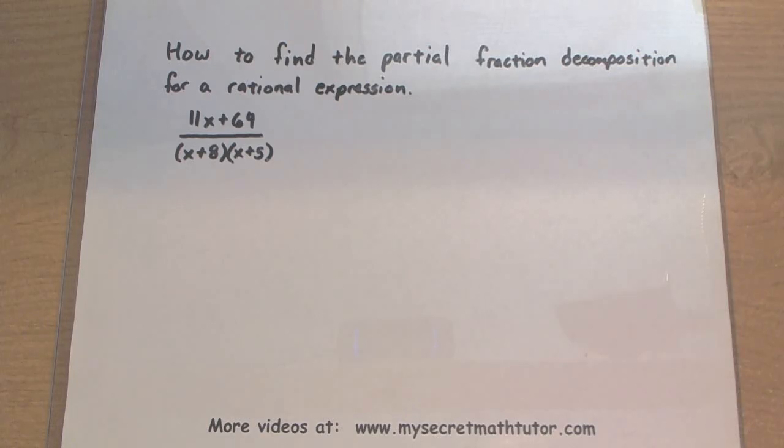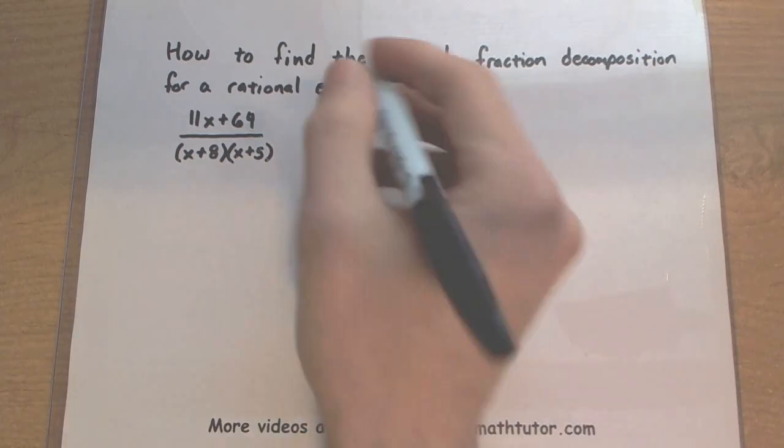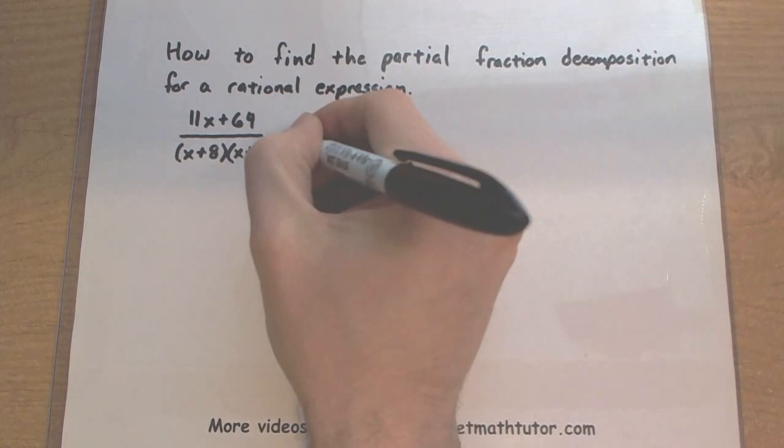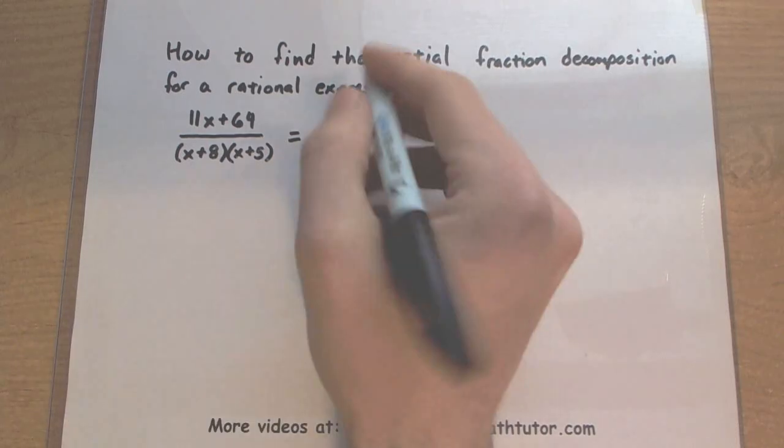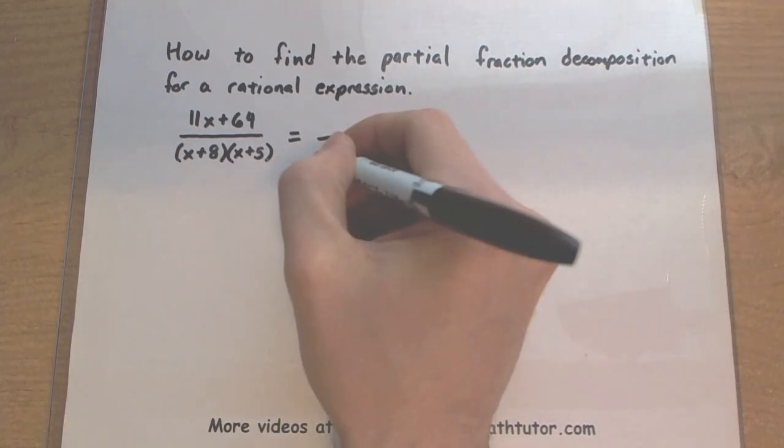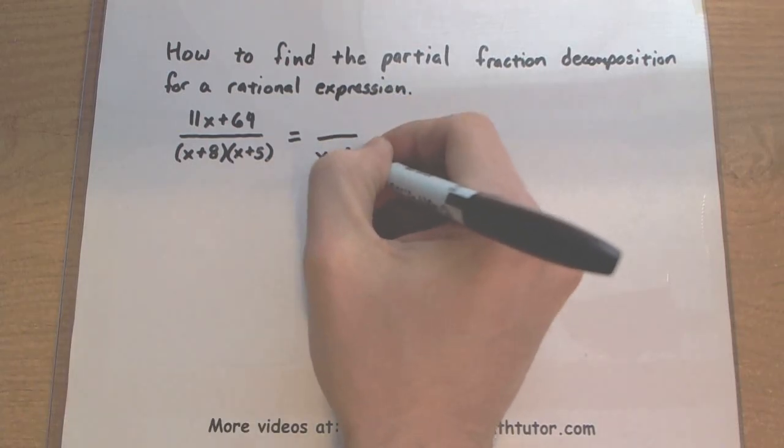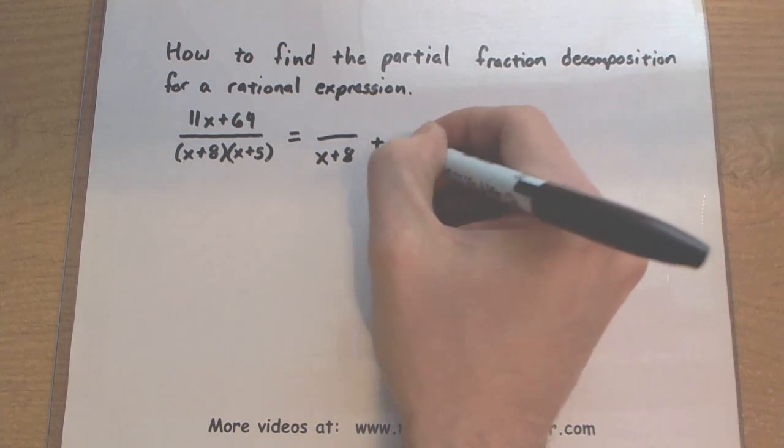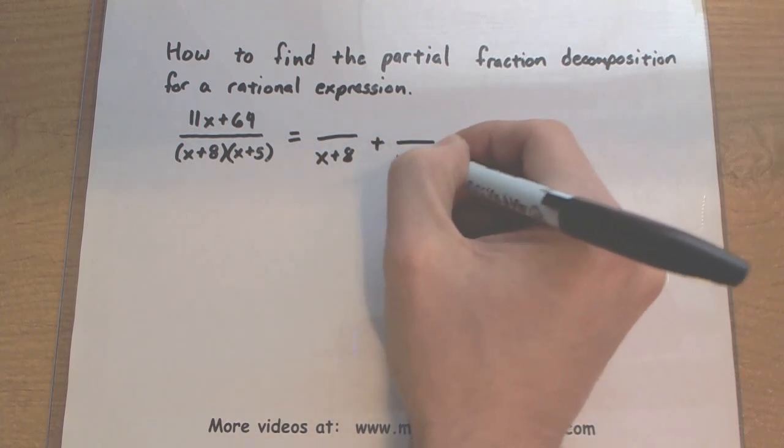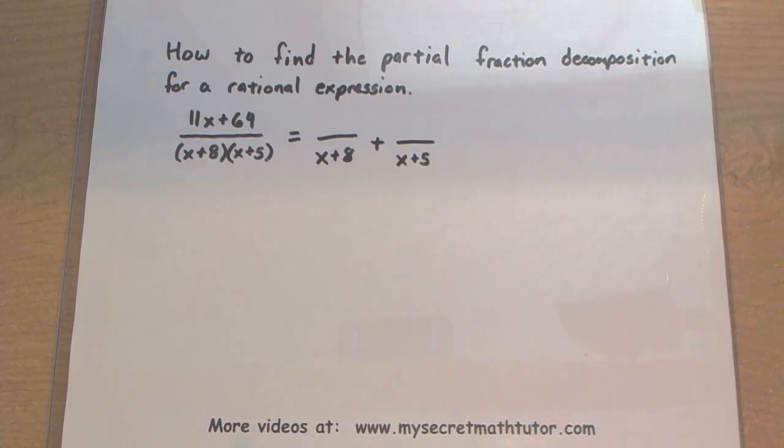In order to start this process, we have to know what the new denominators are going to be, and they come from the original denominators in our original rational expression. In my new denominators, I want to make sure that I have a piece for each of the factors. Since I have two factors, I'm basically going to have two fractions here.